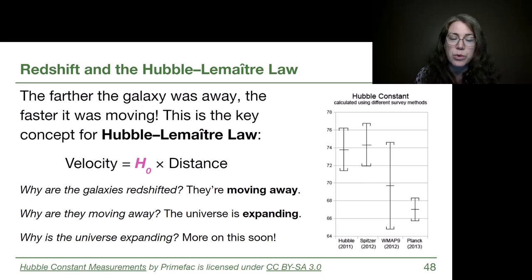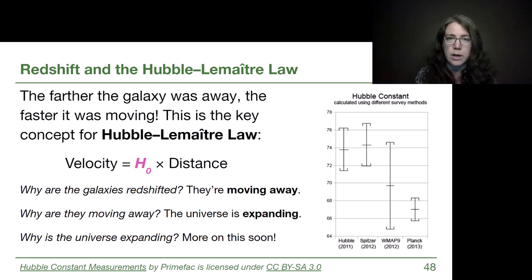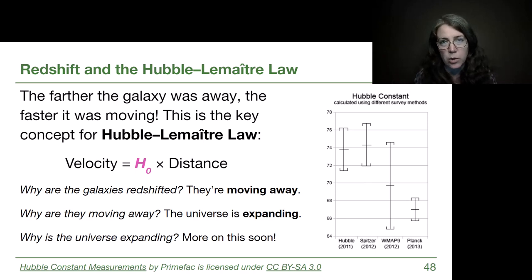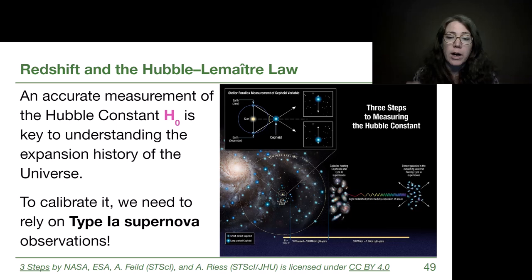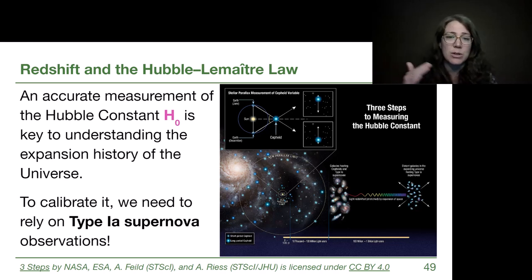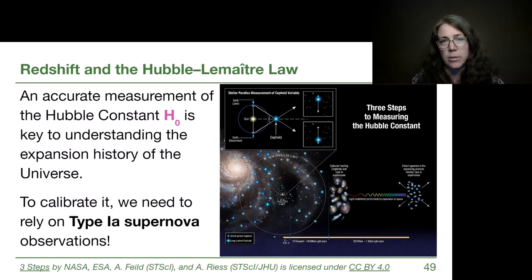For this to really work as a solid rung on our ladder, we have to know the Hubble constant. Recent survey data from different methods have given us numbers between 66 and 76 in the relevant units, and they don't actually all agree with each other. So this is an open question in astronomy — it's starting to identify for us that the Hubble constant may not be so constant. To use this method, we need an accurate measurement, whether it's 68 or 72. To properly calibrate it, we need a ladder rung in between Cepheid variables and these data measurements.